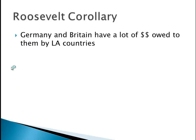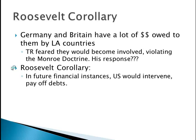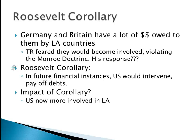Let's talk about the Roosevelt Corollary — very, very important. Germany and Britain were owed a lot of money by Latin American countries. TR feared they would become involved, violating the Monroe Doctrine — remember, from 1823 during President Monroe's administration, it said to Europe: stay out of Latin America. So TR's response was the Roosevelt Corollary to the Monroe Doctrine: in future financial instances, the U.S. would intervene and pay off debts, keeping Germany and Britain out. The impact of this corollary is the U.S. became more involved in Latin America, and there's going to be lots of resentment from many Latin American countries.